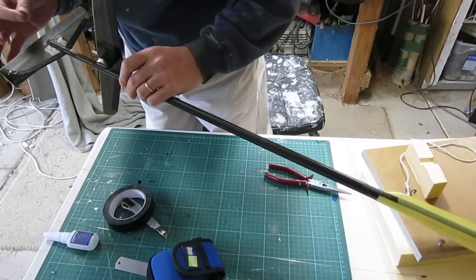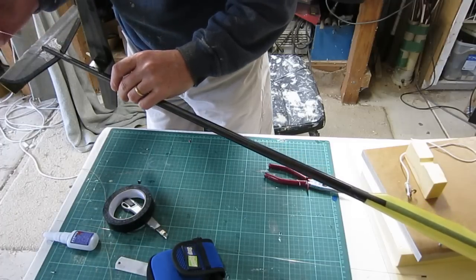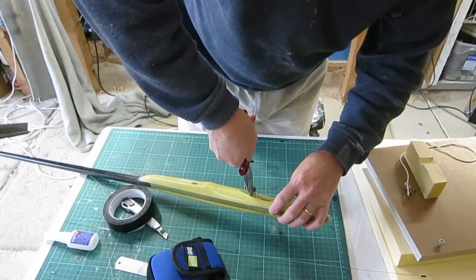I taped the line to one of the pushrods so that I can thread it down through the fuselage. Otherwise it's pretty hard to get it down the full length.